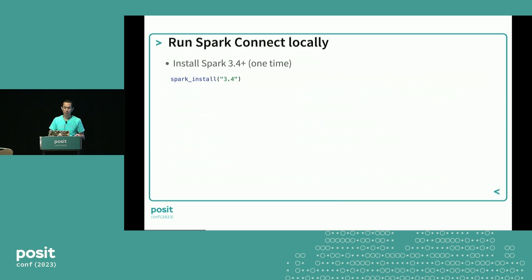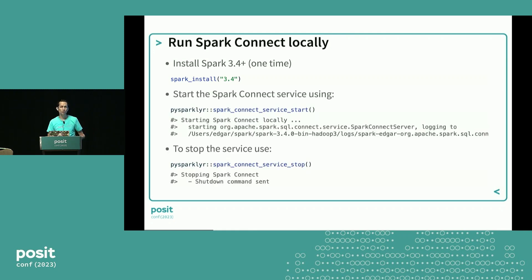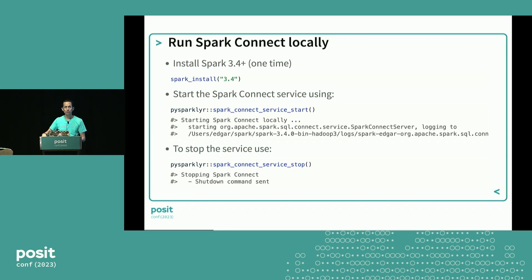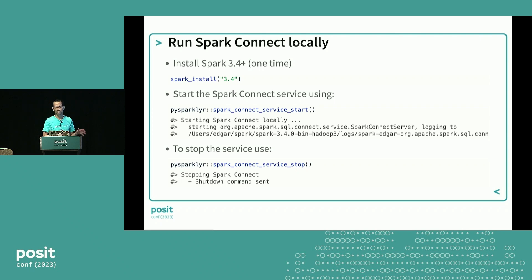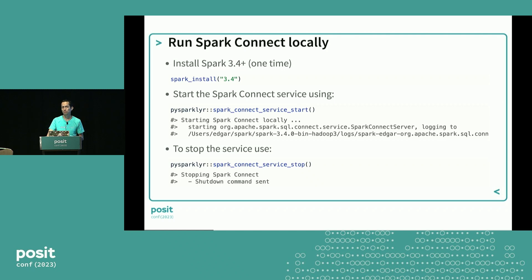You can also run Spark Connect locally. This is something we're used to when learning Spark — you run it locally, it starts Spark, and stops the service when you disconnect. For Spark Connect, it's a little different: you have to start the service separately and stop it separately from your connection. We have this available now and are definitely going to improve it to make it easier to use with more customizations.